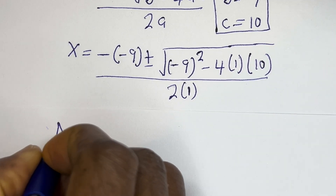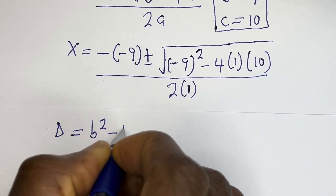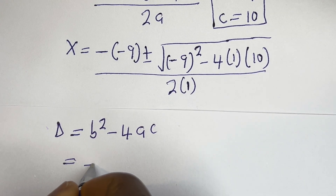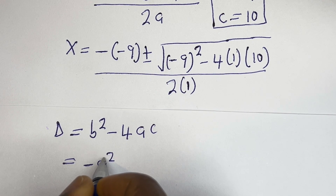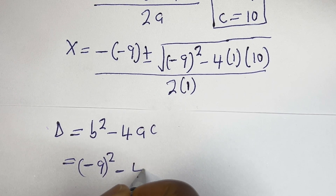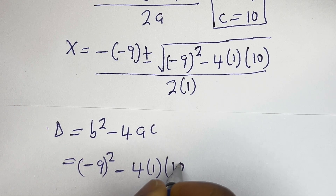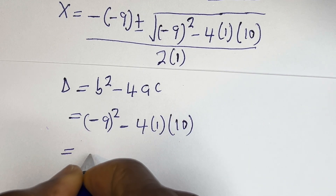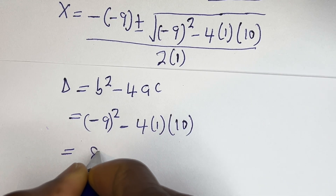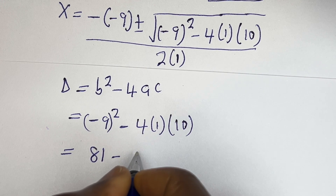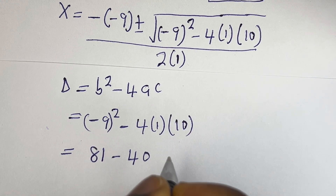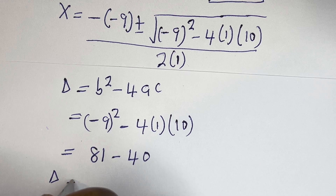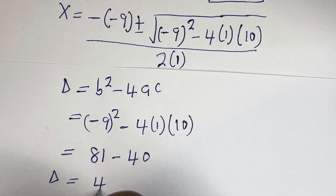The discriminant d is equal to b squared minus 4ac. So d equals minus 9 squared minus 4 times 1 times 10. That is 81 minus 40, which equals 41.